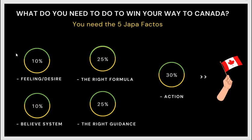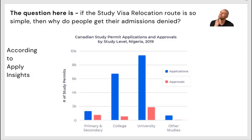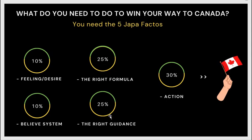What do you need to win your way to Canada? You need five factors. Number one: desire — do you really have the desire to relocate? Number two: belief system — do you believe you can actually relocate to Canada just as others have shown us? Number three: the right formula — are you using the right formula? Number four: the right guidance. Number five: action. If you combine all of these, you will see yourself in Canada.